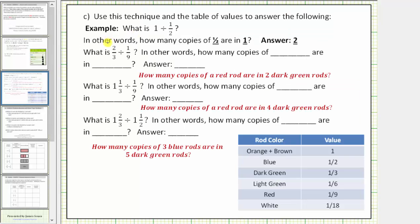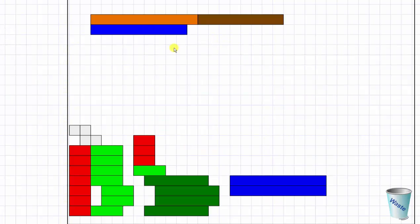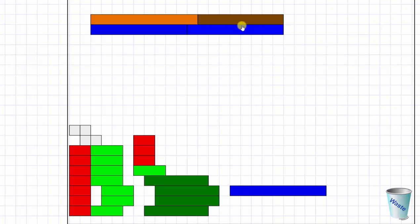For part c, we're asked to use this technique and the table of values to answer the following questions. The first question is: what is one divided by one half? In other words, how many copies of one half are in one? We should recognize there are two copies of one half in one, and therefore one divided by one half equals two. Using the rods, notice how it takes two blue rods to form one whole unit, and each blue rod equals one half, showing there are two copies of one half in one.